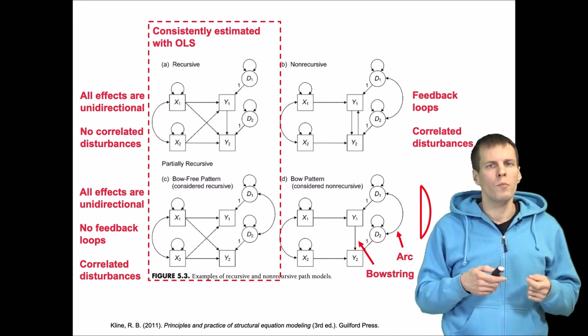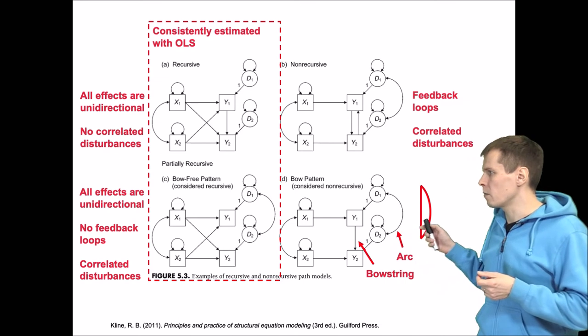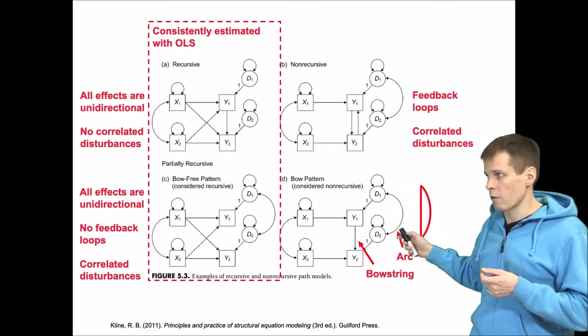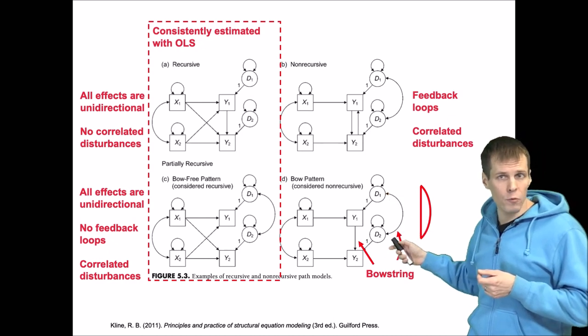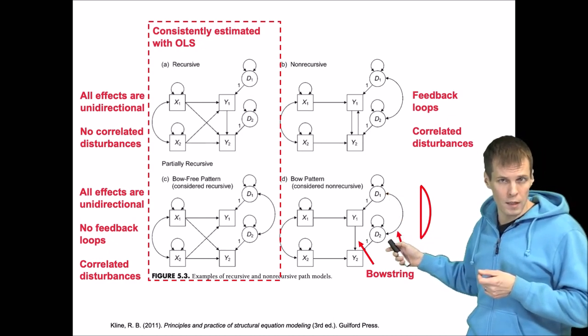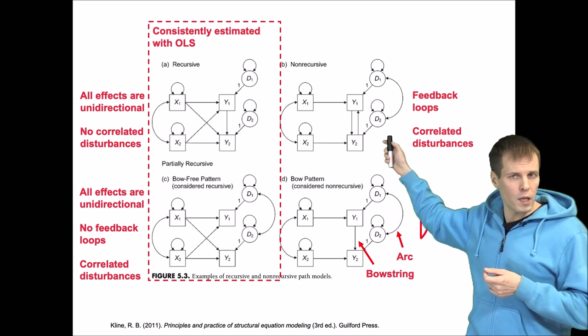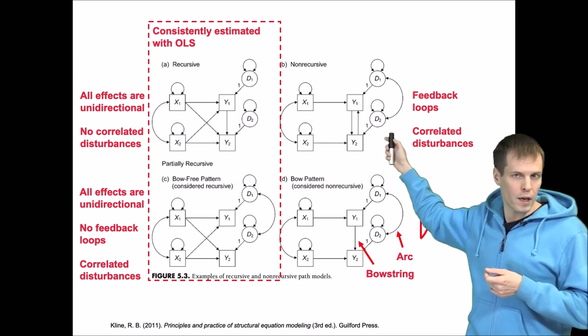Because there are bows, there's an endogeneity problem because the error term of Y2 correlates with Y1. This cannot be consistently estimated with OLS, and this feedback loop here cannot be consistently estimated with OLS either.